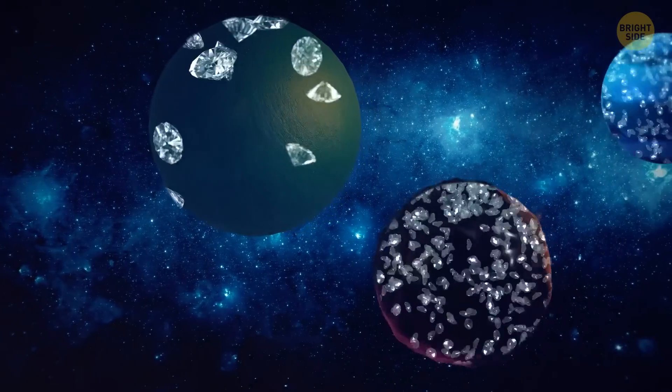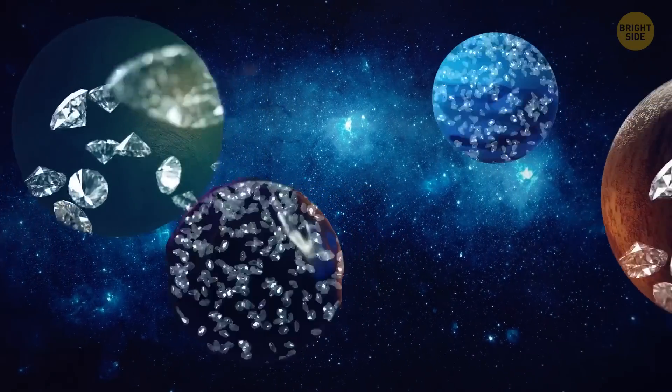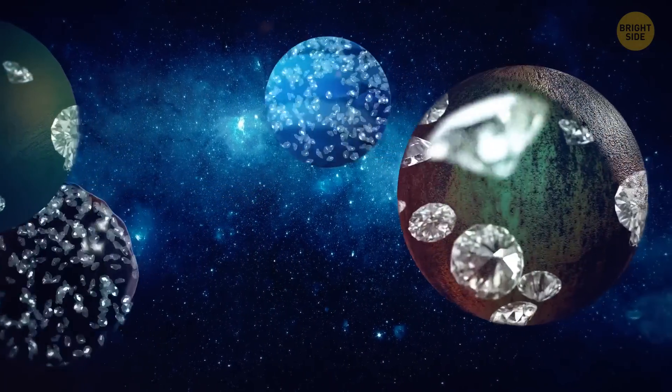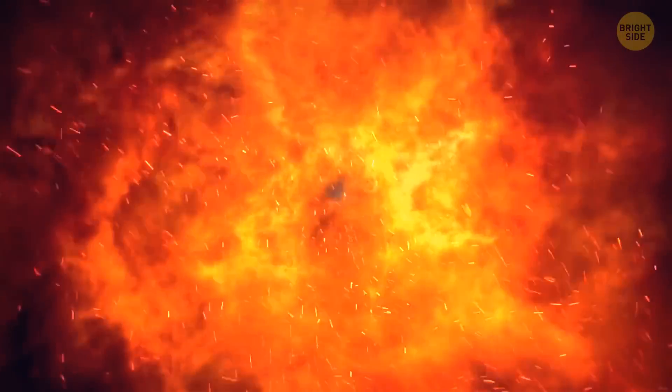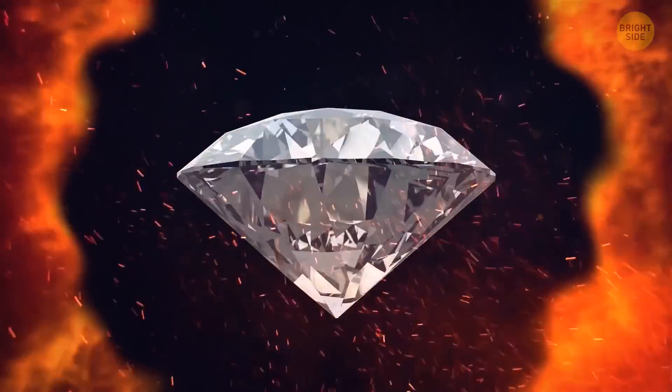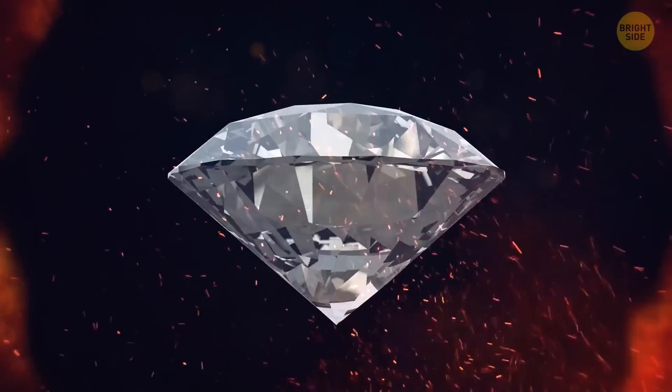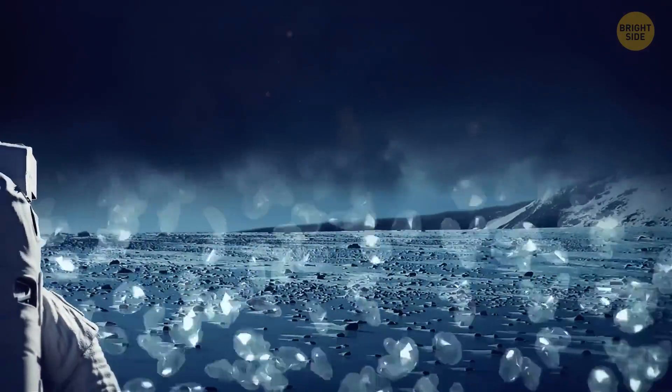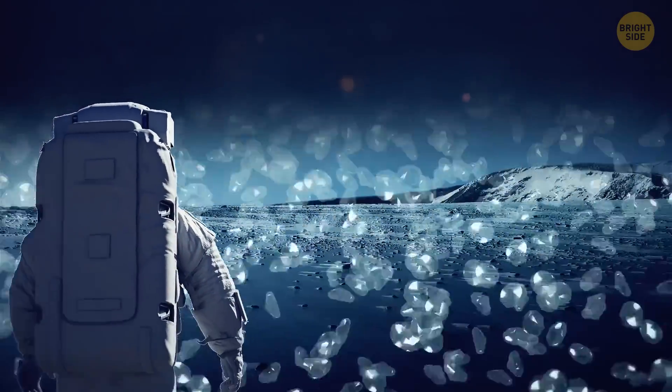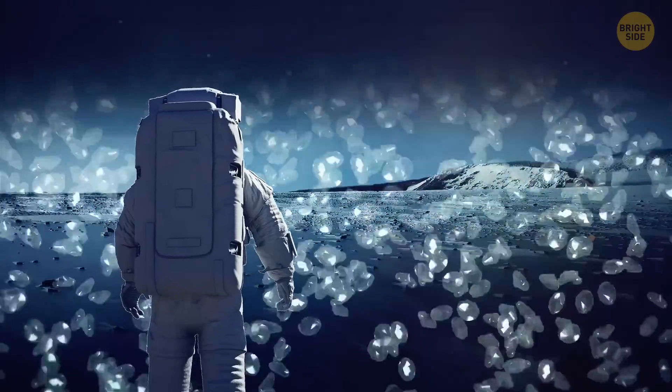It's also possible that diamonds are raining down on over 1,900 exoplanets out there in space. Scientists found out that you don't need particularly hot temperatures for carbon to turn into diamonds, like it was previously believed. Up until recently, we only knew of Neptune and Uranus to potentially feature sparkling showers.